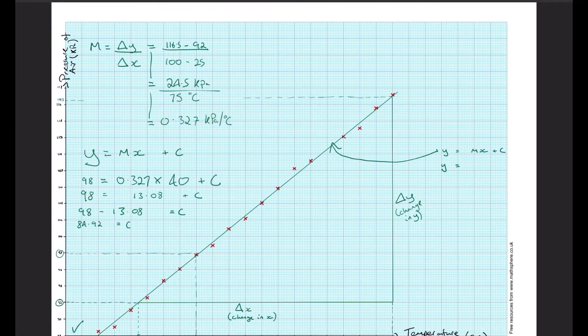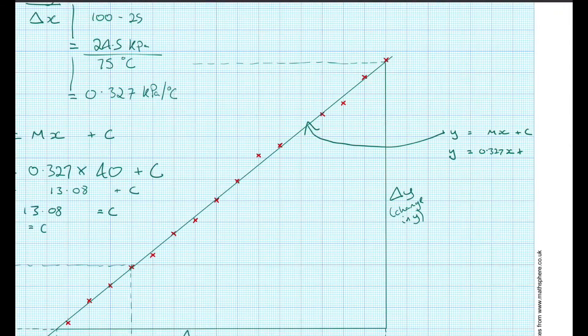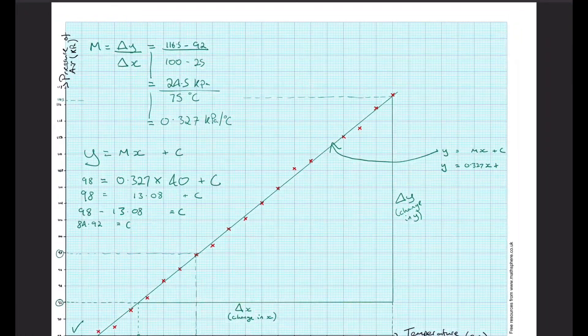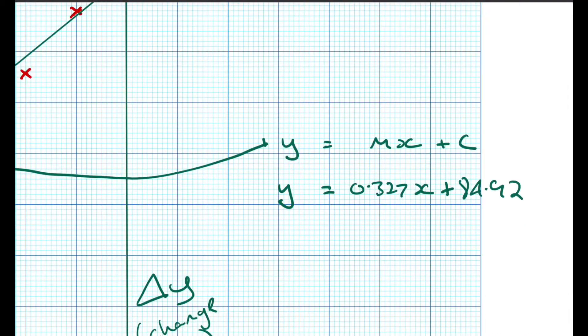This equation can give us any value of y provided we know x or any value of x provided that we know y. So y equals 0.327x plus 84.92. What this means is that we have a line that starts at 84.92 kilopascals when the temperature is zero and goes up at a rate of 0.327 kilopascals every one degree Celsius.